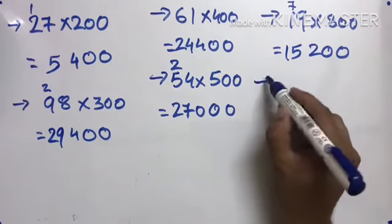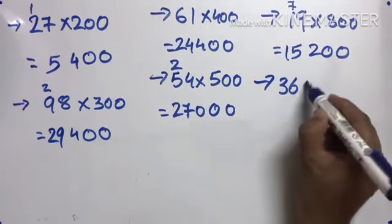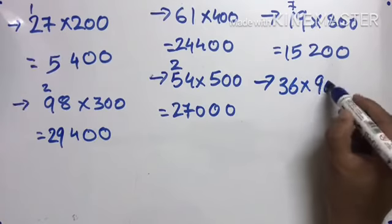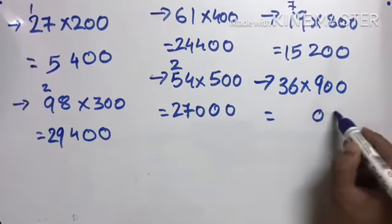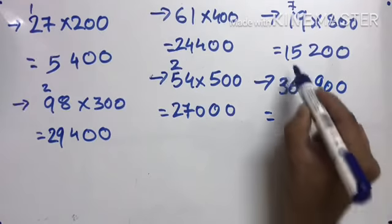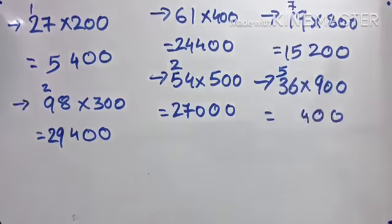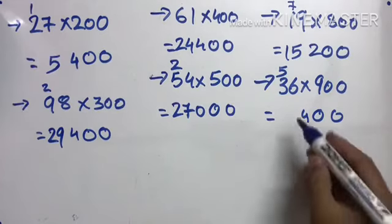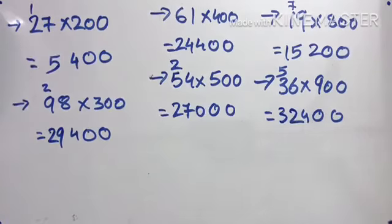36 times 900. Two zeros. 9 times 6 is 54, carry 5. 9 times 3 is 27 plus 5 is 32. 32,400.